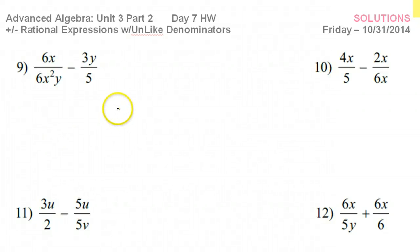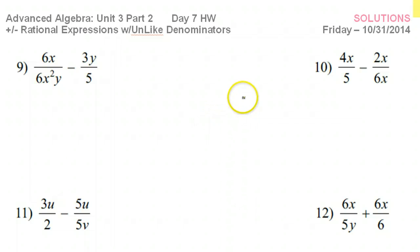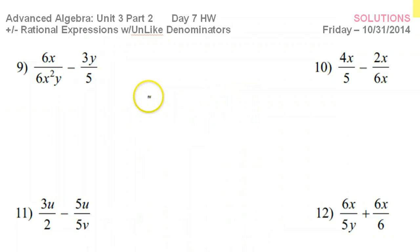This is part two of our lesson on adding and subtracting rational expressions with unlike denominators. These ones are simple — they don't involve any factoring other than doing the GCF.